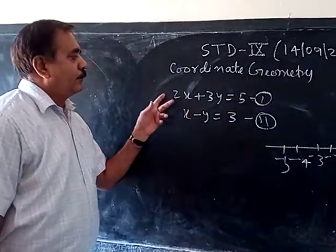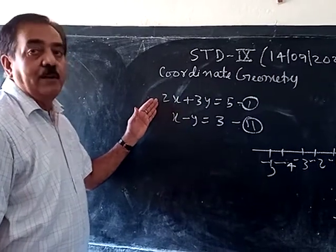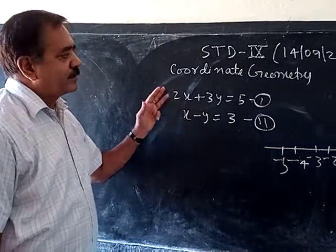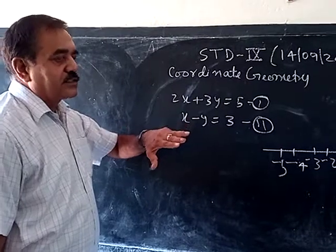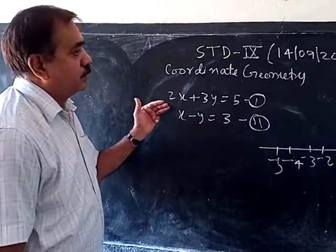You have studied earlier to find the value of x and y, you are solving it by simultaneous method. Simultaneous method, there are three methods: substitution, elimination, and cross multiplication.